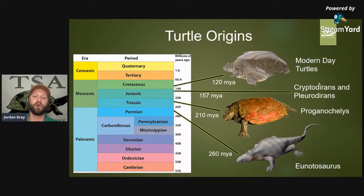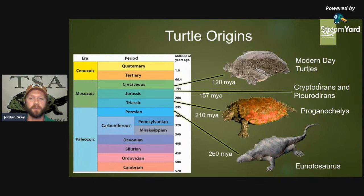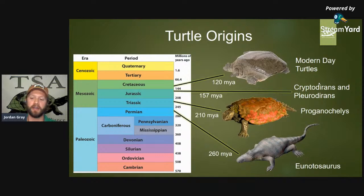About 260 million years ago, during the geologic time period known as the Permian, this animal basically arose called Eunotosaurus. Eunotosaurus doesn't really look like a turtle to you or me — for the most part it resembled a lizard. But in the fossil record, this is the first animal to start showing the bone structure and cartilage structure that gives rise to modern-day turtles.